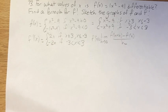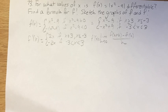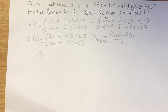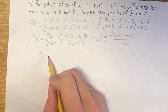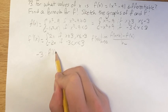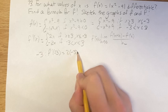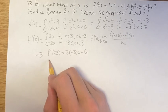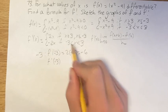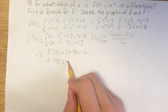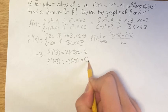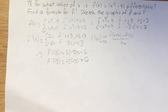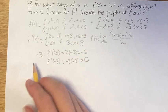Since we know the equations for the derivatives now, for x = negative 3: approaching from the left, when x is less than negative 3, we use 2x, so f prime of negative 3 is 2 times negative 3, which is negative 6. From the right, when x is greater than negative 3, we use negative 2x, so negative 2 times negative 3, which is positive 6. These are not the same from the left and the right, so the function is not differentiable at negative 3.